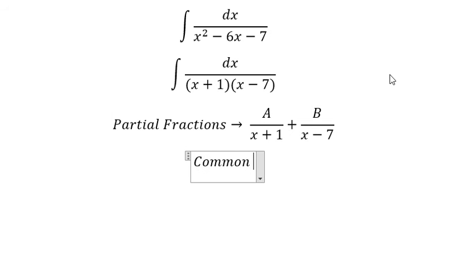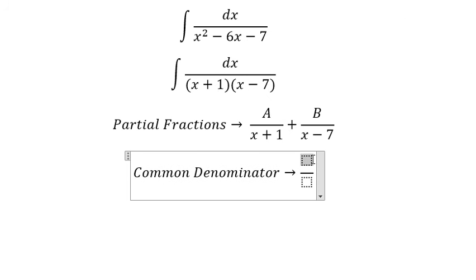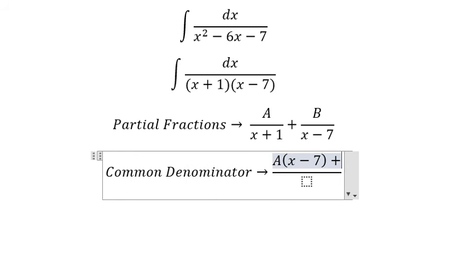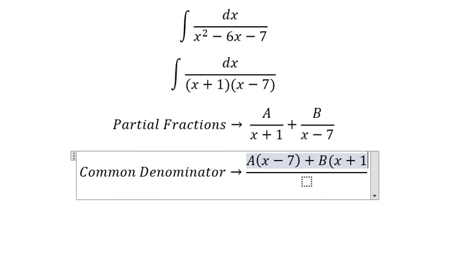We do the common denominator. A multiplies with x minus seven, and B multiplies with x plus one.